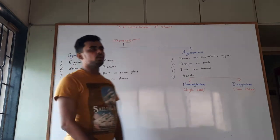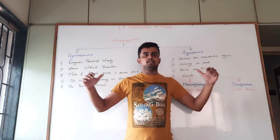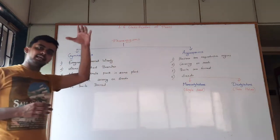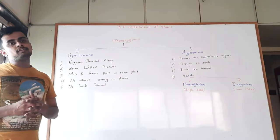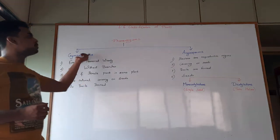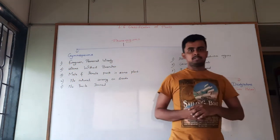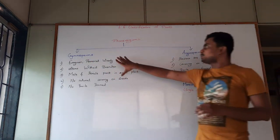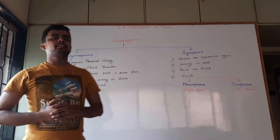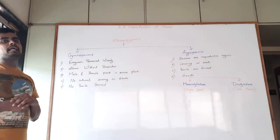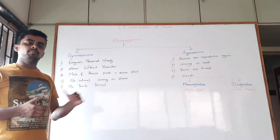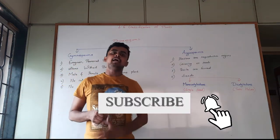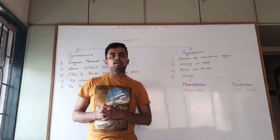Phanerogams are classified into two categories: gymnosperms and angiosperms. From the names, we know that gymnosperms means naked seeds — seeds that are not covered, so these plants have no covering on their seeds. Angiosperms, on the other hand, have their seeds covered.